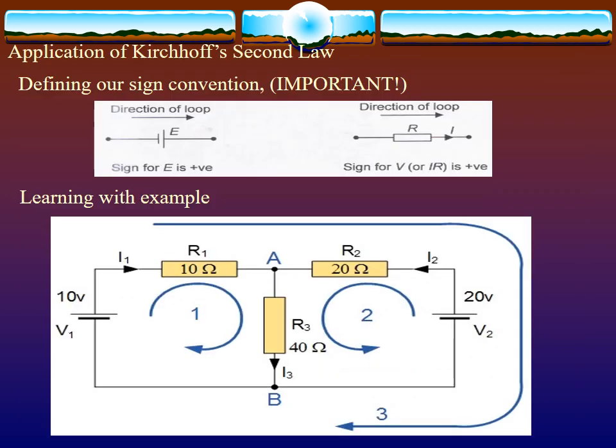Application of Kirchhoff's second law: defining a sign convention is important. In the direction of the loop, the sign of IR is positive.